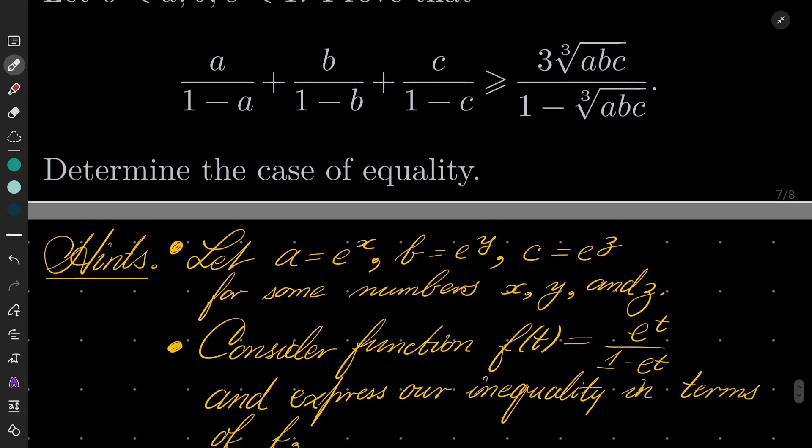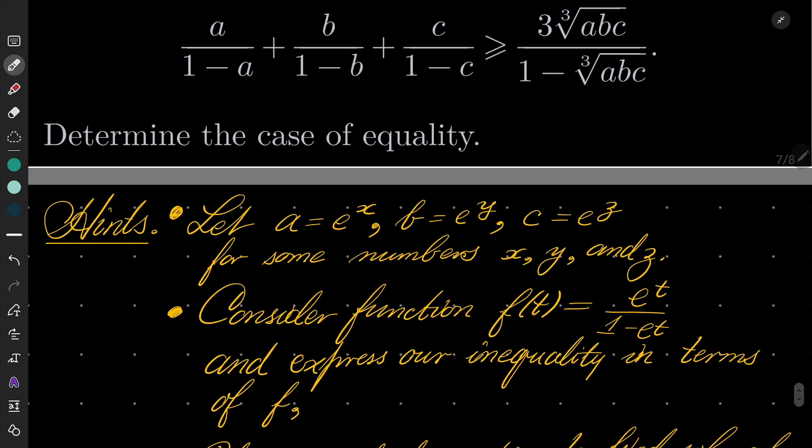Consider for some numbers x, y and z, then consider the following function f of t equals e to the power of t over 1 minus e to the power of t and express our inequality which we wish to demonstrate in terms of function f.